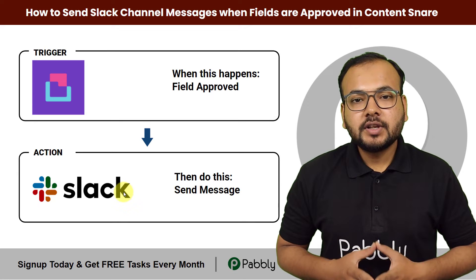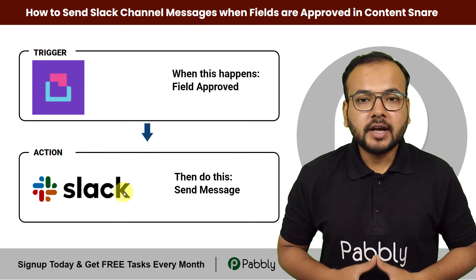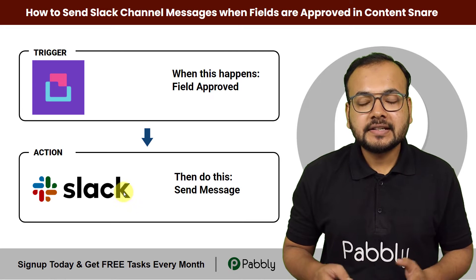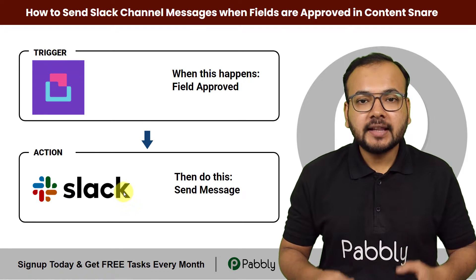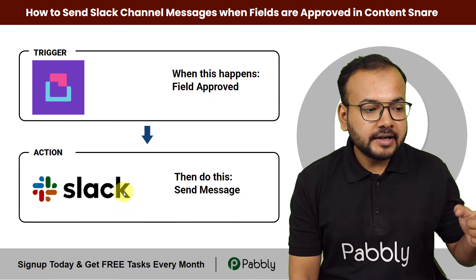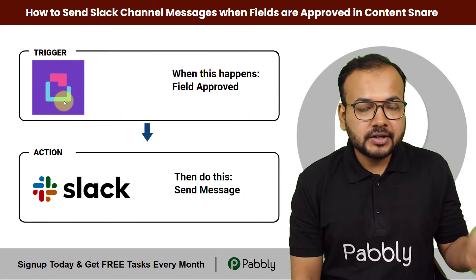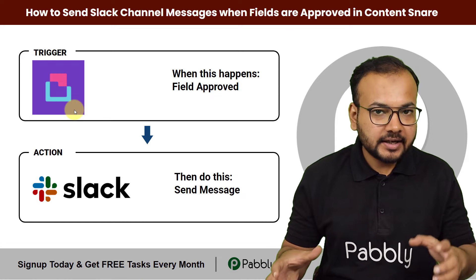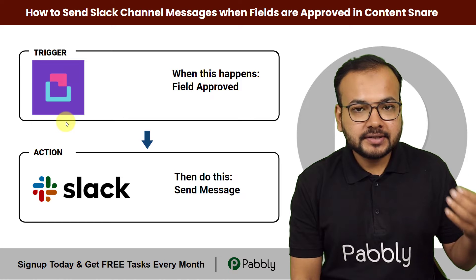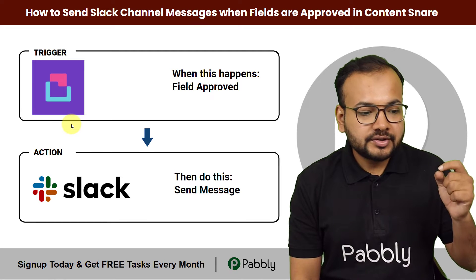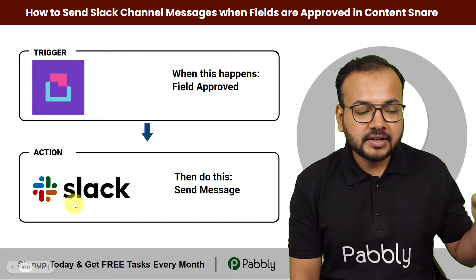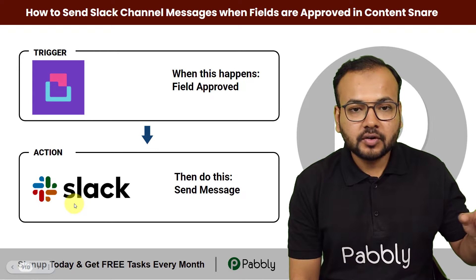In this video you will learn how you can send the approved field data from Content Snare to your Slack channel as a new message. We are connecting Content Snare as the trigger application. Content Snare is a data collection tool, and if you are collecting data using this application and want to send it to your Slack channel, you have to connect Slack as the action application in the automation workflow.